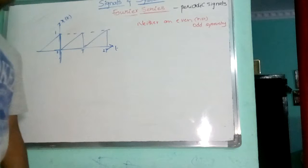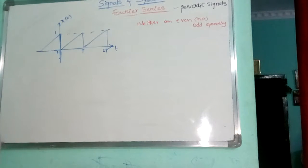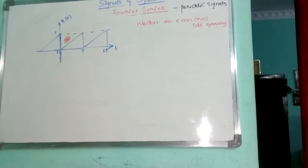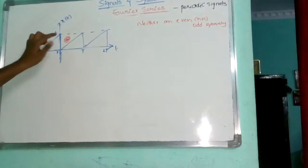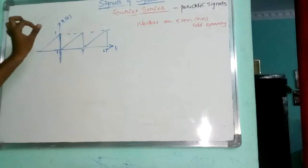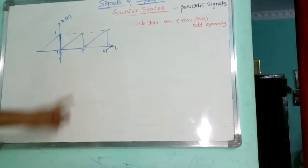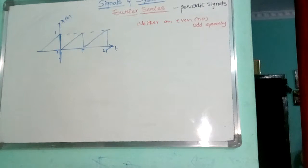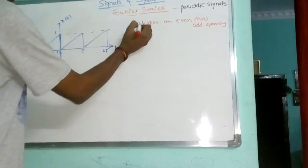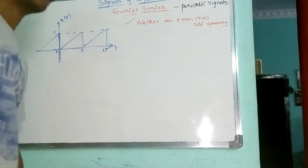We cannot tell what is the symmetry of this. Why? Because this part which is there here, that is empty here. We cannot tell what type of symmetry it is. Depending upon the signal, if it is continuous from the origin to the other, then we can say — but this signal, we cannot say. So, this is neither an odd nor an even symmetry.